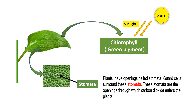Plants have small openings on the surface of the leaf where you can find small pores. These pores are called stomata — small openings surrounded by guard cells. The stomata are the openings through which carbon dioxide enters the plant, and gaseous exchange takes place through them. The CO₂ and oxygen exchange in plants occurs through the stomata, and water is also lost through these pores.